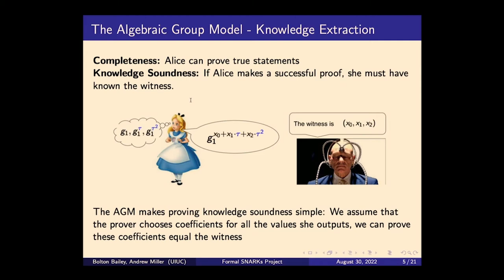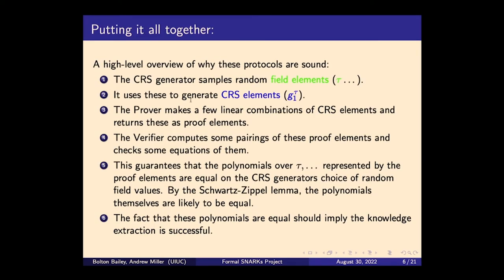Given the AGM assumption, what is the goal we're trying to prove? It's knowledge soundness: if Alice makes a successful proof, we're trying to prove that she knew the witness. In the AGM, this means that from the coefficients we know Alice has, we can extract the witness. The CRS generator samples random field elements, uses them to generate CRS elements by raising group generators to powers of those field elements, and passes them to the prover and verifier. The prover then makes linear combinations of those CRS elements, and these are the proof elements.